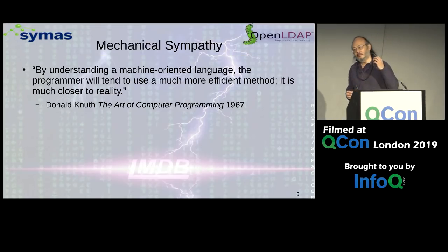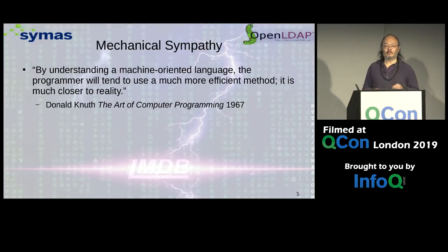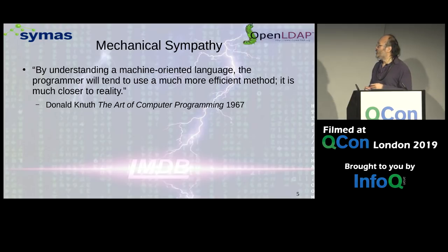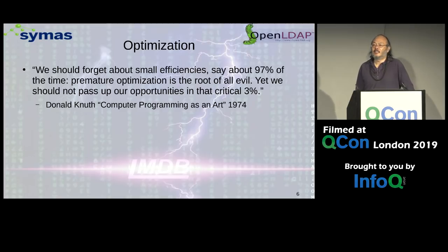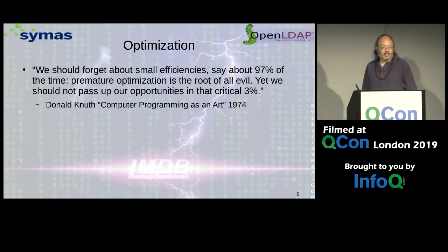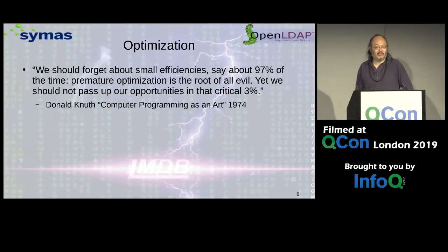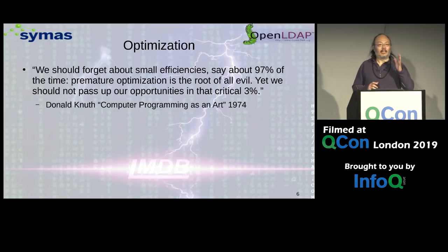It's interesting to look at what famous computer scientists have written about performance and their perspectives over time. Donald Knuth wrote about this in 1967 — the idea was you needed to understand something about the machines you're working with. Then a few years later, it's almost like he changed his perspective, saying we're focusing too much on optimization and maybe should back off. This quote has probably circulated through all of your consciousness: 'premature optimization is the root of all evil' — though the misquote often leaves out 'premature.'